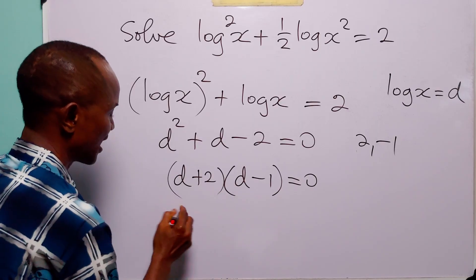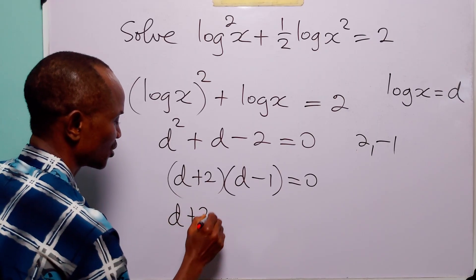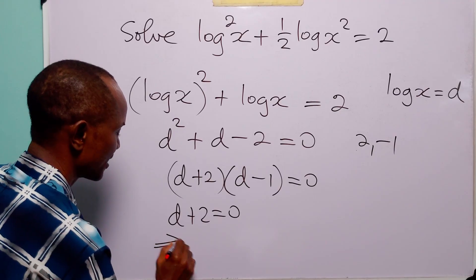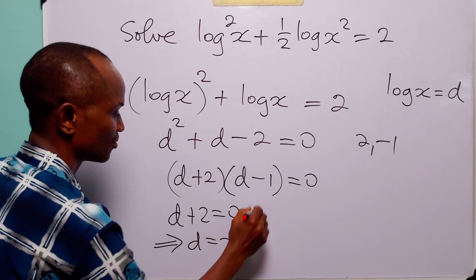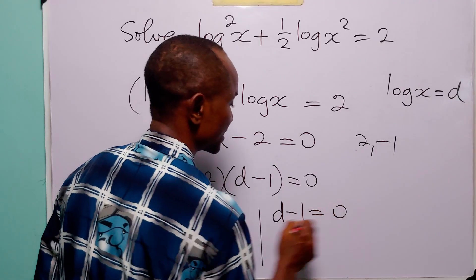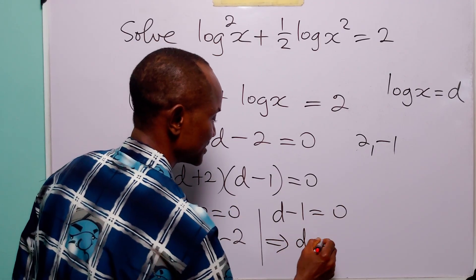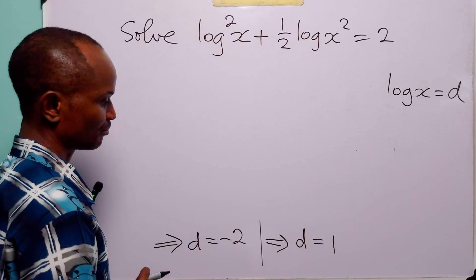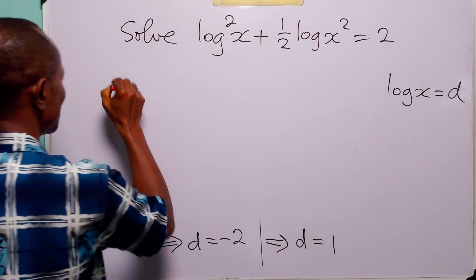From here we have that either d plus 2 is equal to 0, from where d is equal to minus 2, or d minus 1 is equal to 0, from where d is equal to 1. But of course d is equal to log x.